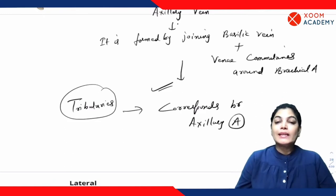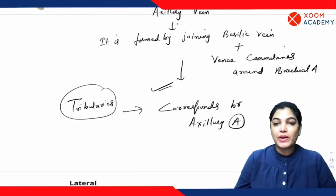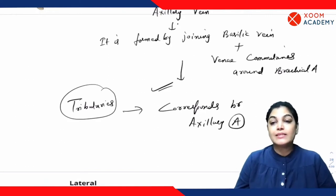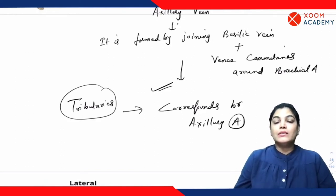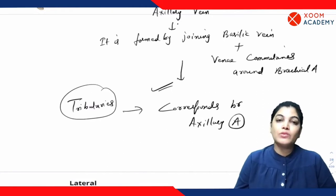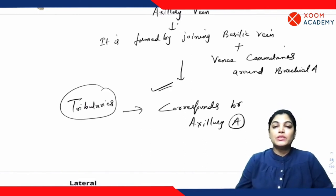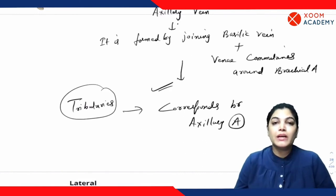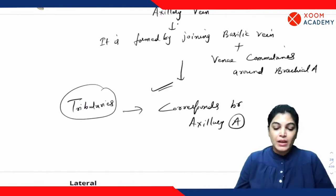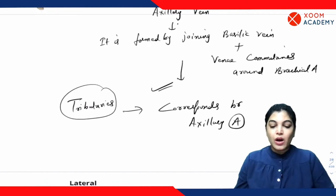An important clinical aspect to know about the axillary vein: both the axillary vein and axillary artery are covered by the axillary sheath. However, the thickness of the axillary sheath is very thin around the axillary vein so that it can expand when there is excess venous return or blood passing through the axillary vein.